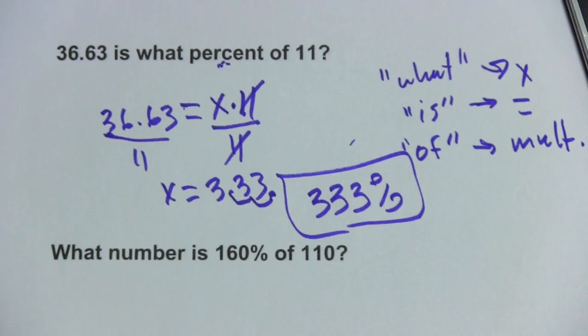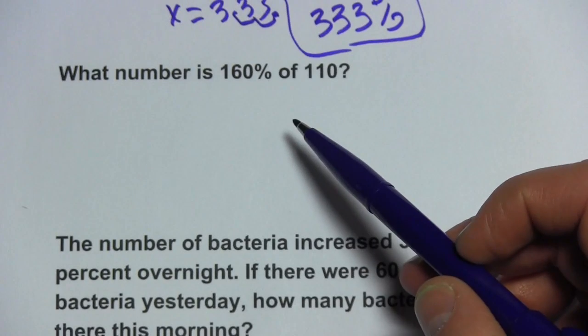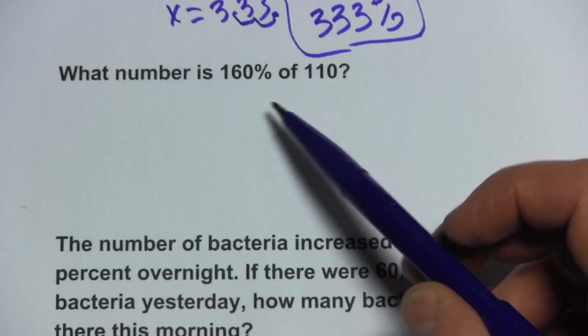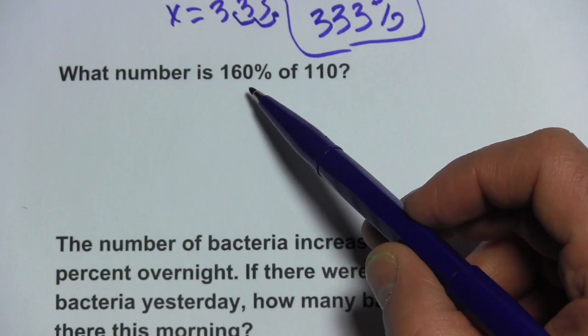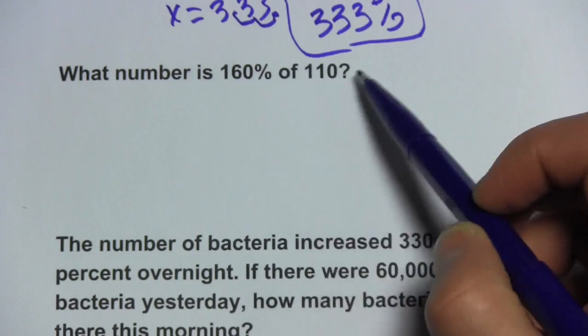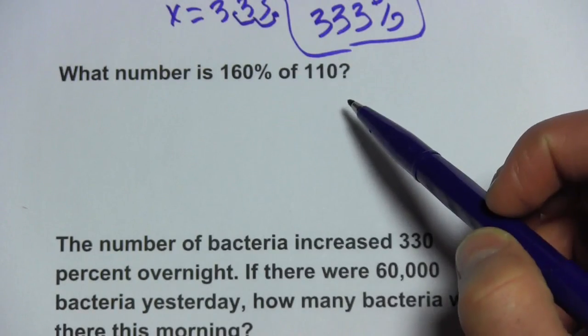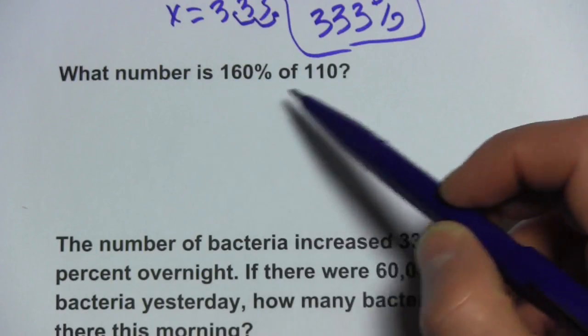Let's try another one. So here we have what number is 160% of 110? Let's think about this for a second so we can check that our answer makes sense. 160% of something is going to be more than 110. It's going to be a little more than one and a half times that. So we'll be looking for an answer to be bigger than 110 but let's do this by converting it to a formula.